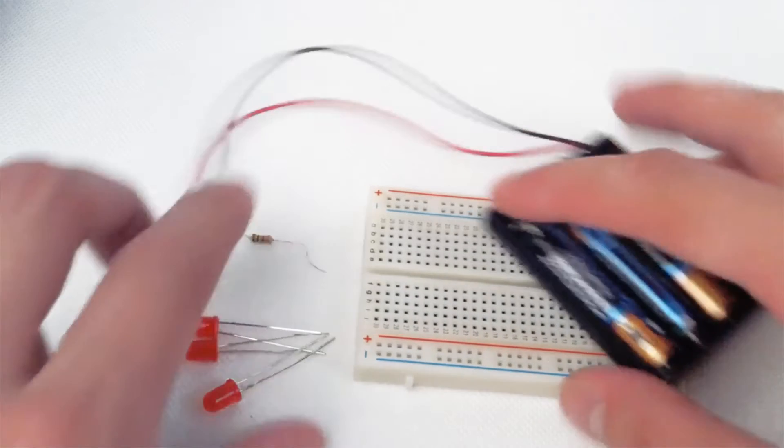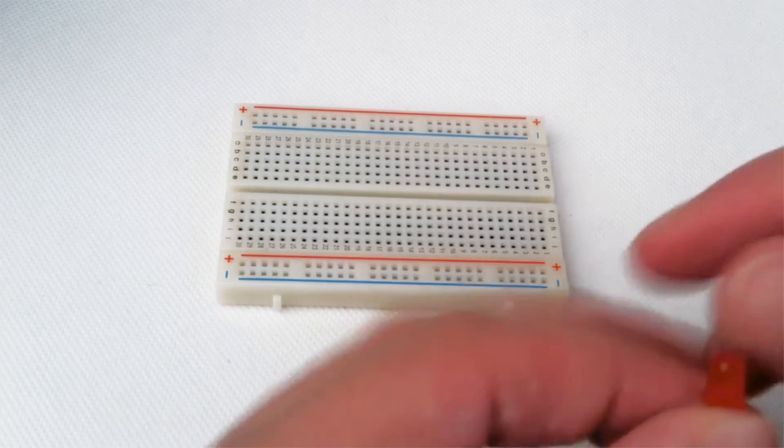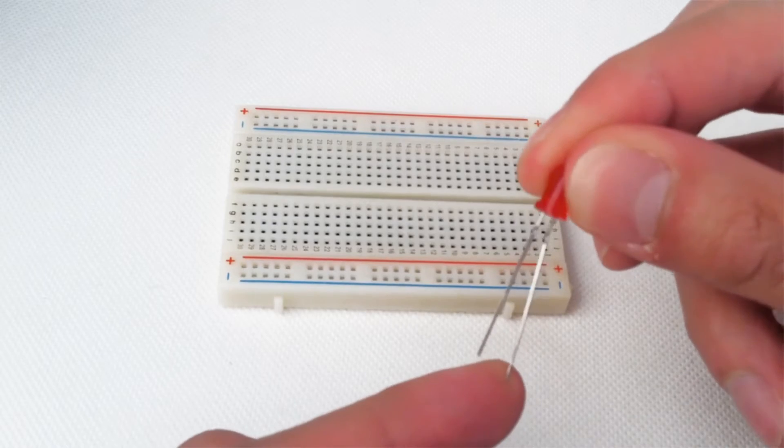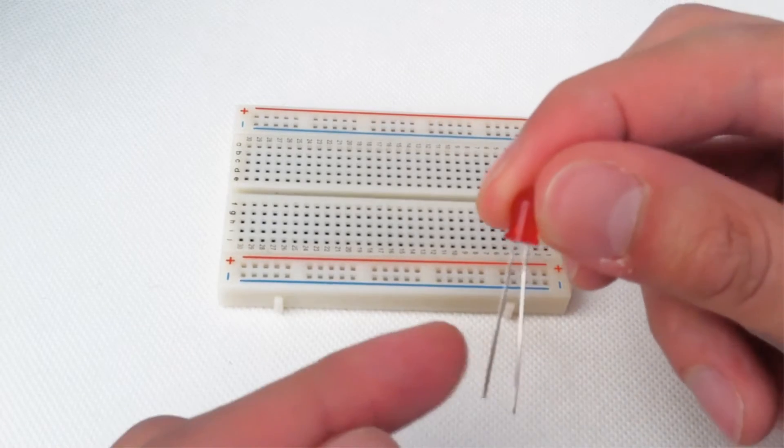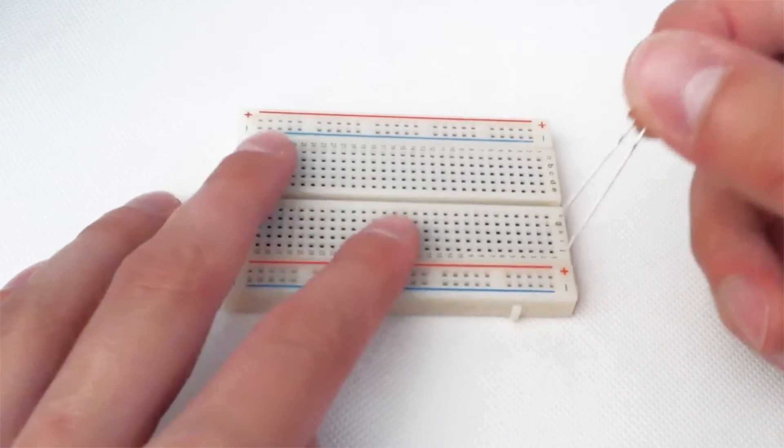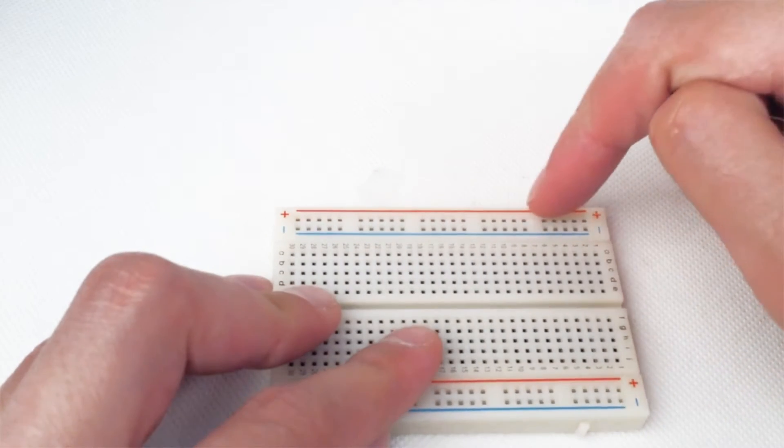We'll start with our LEDs. You can see the longer leg is the positive terminal, the shorter leg is the negative terminal. Because the LED is a diode, it needs to be hooked up the right way or it won't light up. If you can see these two columns, they're different from the main section of the breadboard. These sets of five holes are electrically connected.